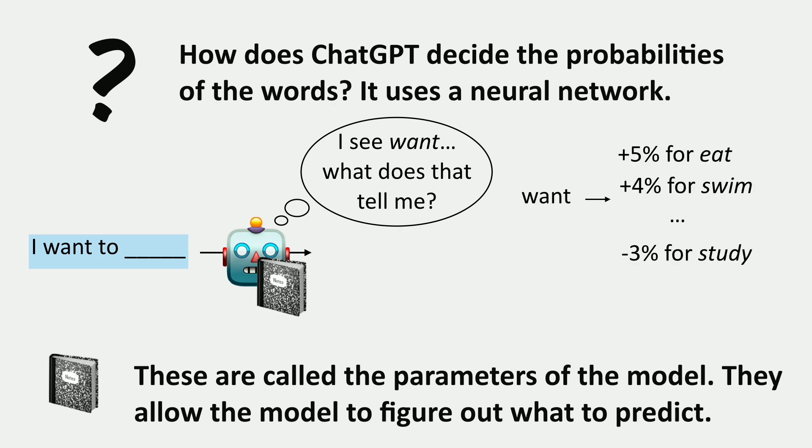Maybe if we see the word 'want,' we should keep track of the fact that it's more likely to want to eat or swim, so those get a boost in their probability, and something like 'study' gets a deduction. A neural network has these associations between input and output and tracks these values through many different layers of computation. Each word in the input has a set of associations with things in the output.